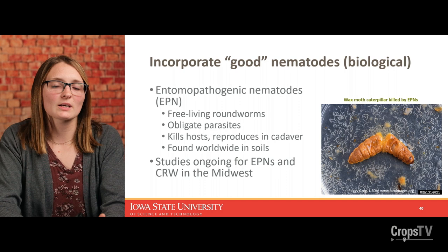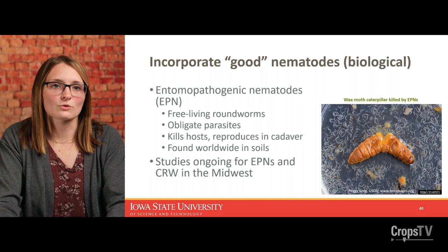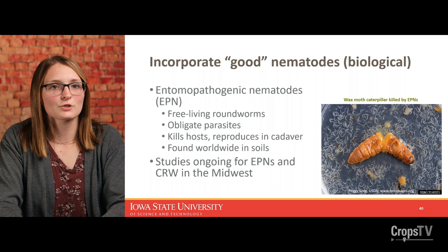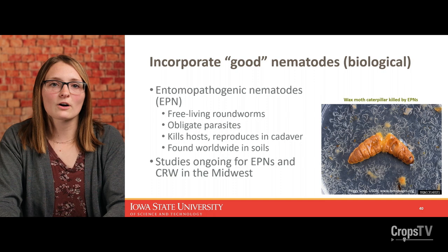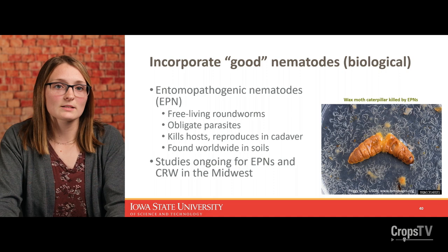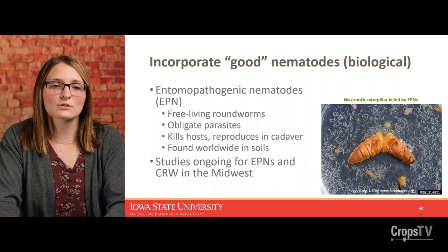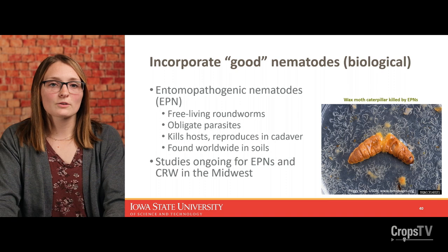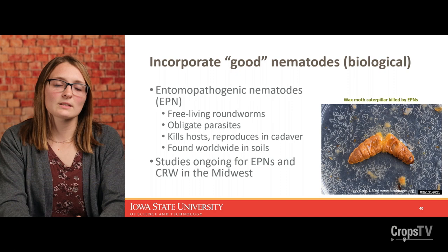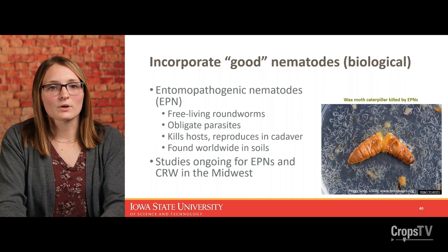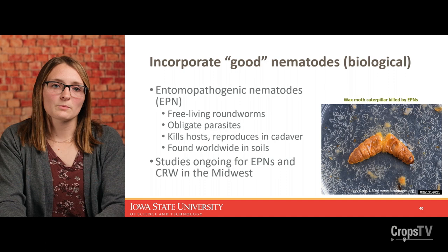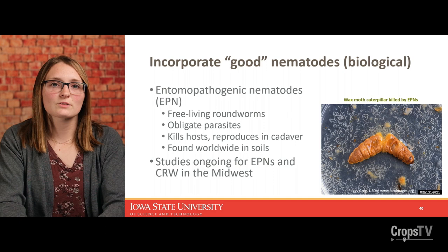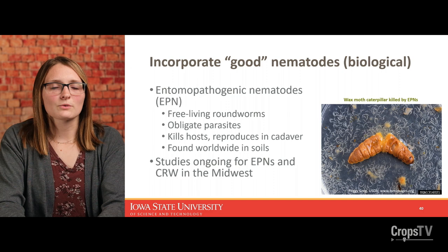Biological control hasn't historically been something we've relied on much for corn rootworm management. There are some things in the soil that may feed on eggs or larvae, but for adults we don't have much for biological control. Something to potentially look forward to in the future are entomopathogenic nematodes (EPNs) — basically good nematodes that will kill their insect host and reproduce in the body of that host. These are found worldwide in soils. There are new studies specifically for corn rootworm in the Midwest looking at applying EPNs to the soil for control, led by Dr. Aaron Gassman at Iowa State. I don't have data to share yet, but it's something to look forward to.